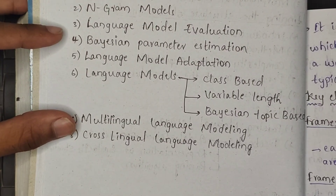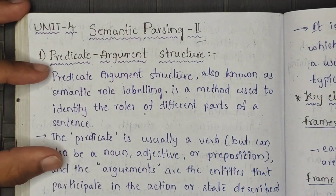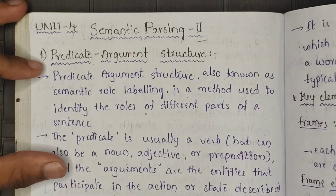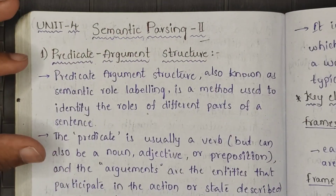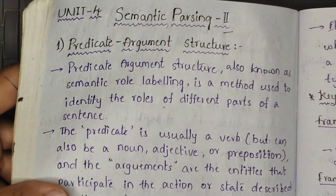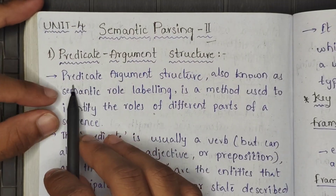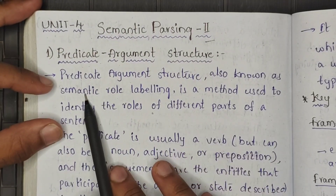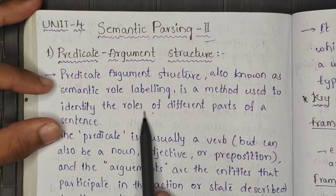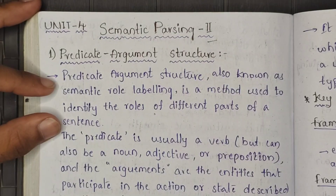So let us start without delay. 4th unit, Semantic Parsing 2 — we have only two topics: Predicate Argument Structure and Meaning Representation System. Predicate Argument Structure is a very lengthy topic. There are two concepts: FrameNet and PropBank. Predicate Argument Structure is also known as Semantic Role Labeling. This method is used to identify the roles of different parts of the sentence.